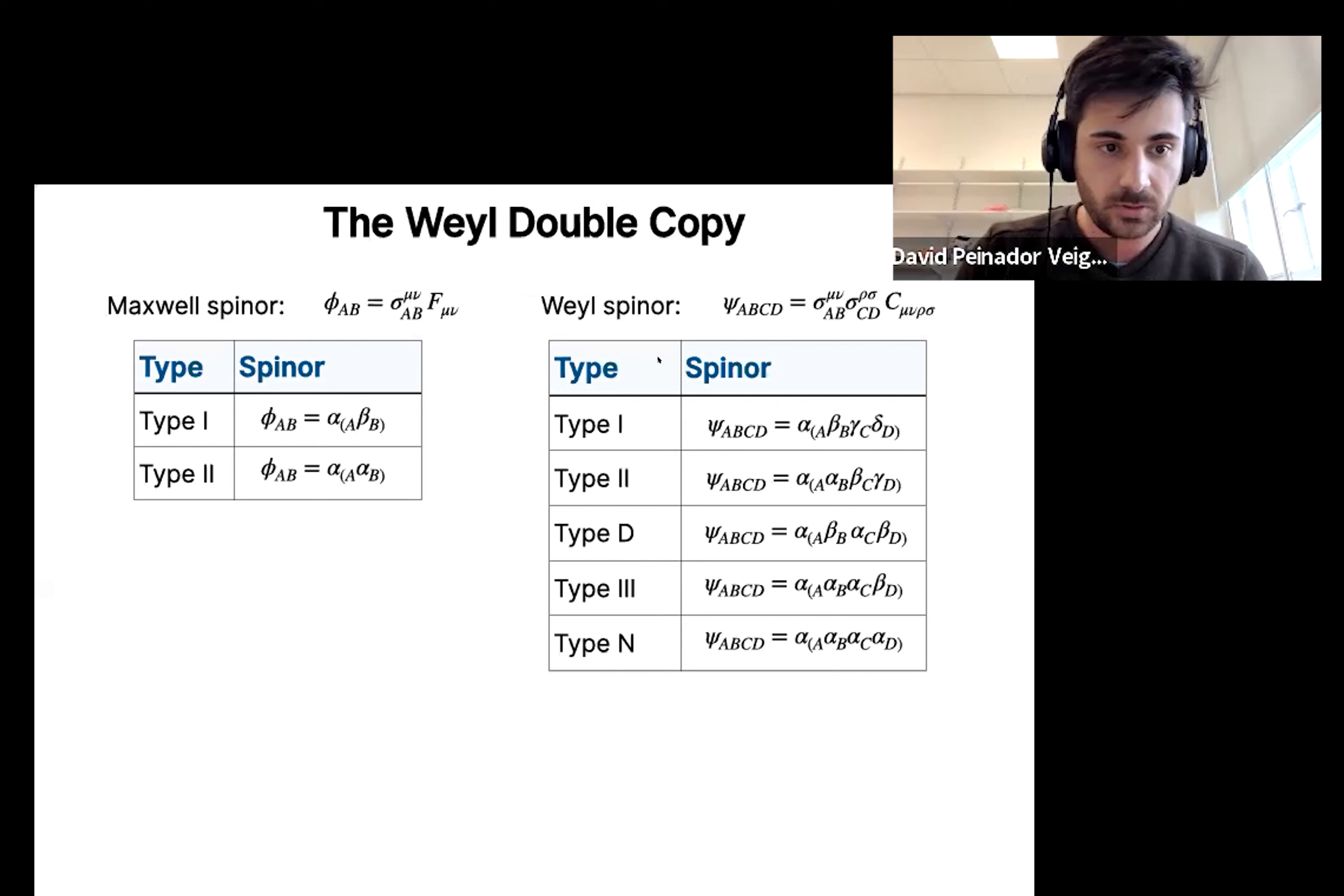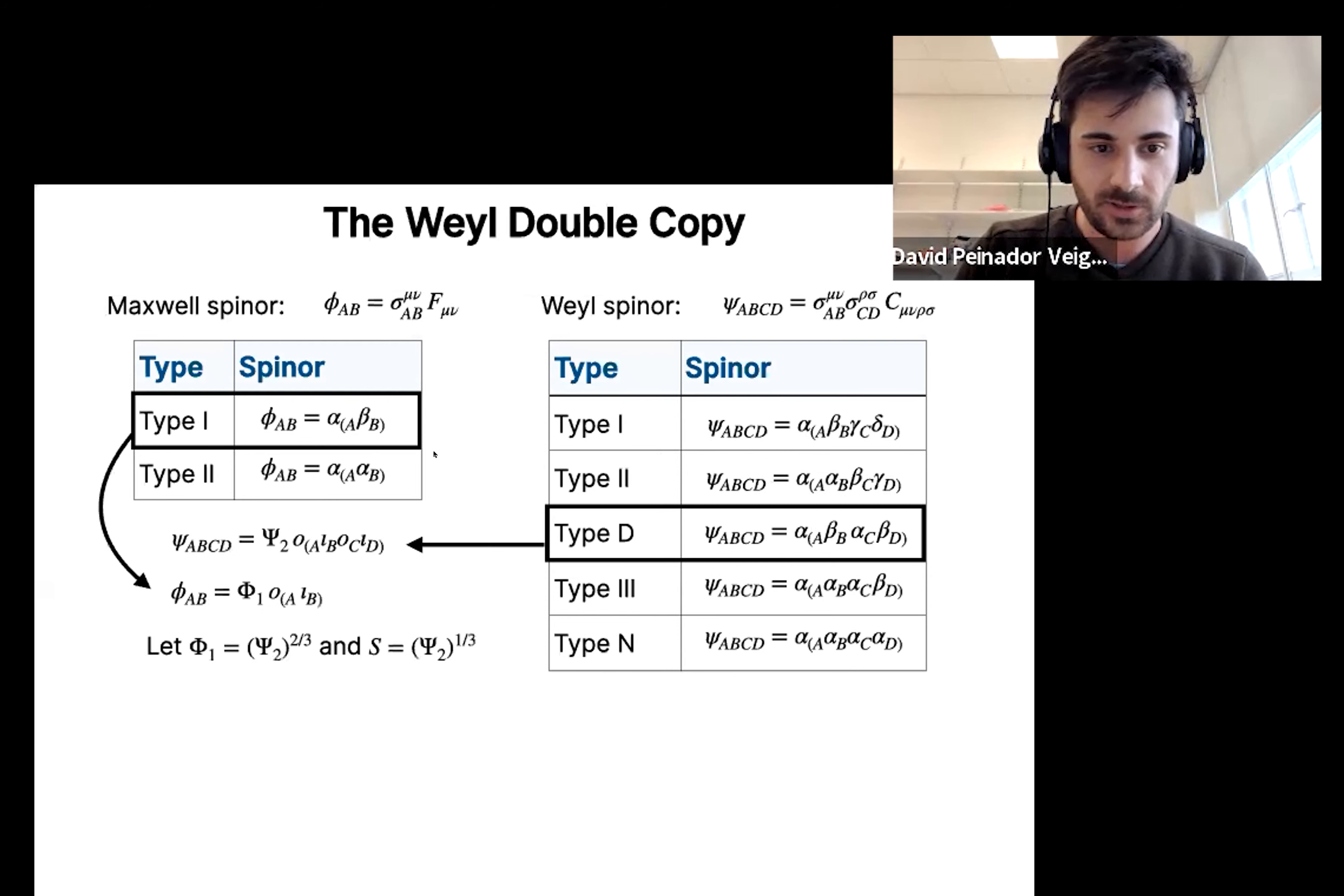Let us now focus on type I Maxwell spinors and type D Weyl spinors. You kind of notice here that the type D Weyl spinor is like two copies of the Maxwell spinor. And let me be more precise. Consider type D Weyl spinor, which we can write like this. The omicrons and iotas are normalized, so that's why I'm taking this factor outside. And type I Maxwell spinor. If we take φ_1 to be ψ_2 to the power of 2/3, and we take a scalar field, which is the remaining power of ψ, ψ_2 to the 1/3,